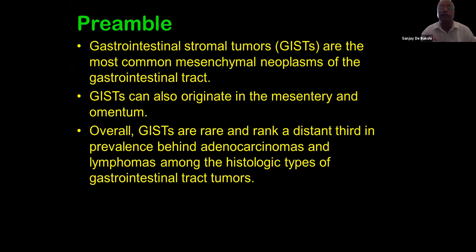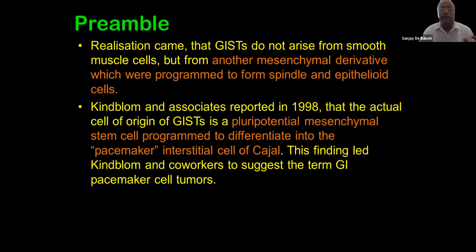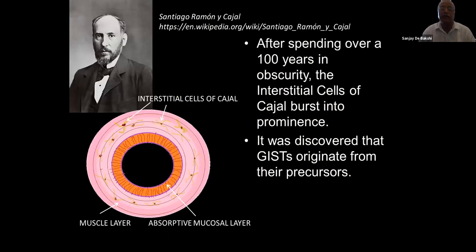GISTs are the most common mesenchymal neoplasms of the GI tract. GIST can also originate in the mesentery and the omentum. Overall, GISTs are rare, ranking a distant third in prevalence behind adenocarcinomas and lymphomas among histologic types of GI tract tumors. In India we don't have statistics, but we do see a fair number of GISTs in various areas of the abdomen — intestinal, non-intestinal, and retroperitoneal.